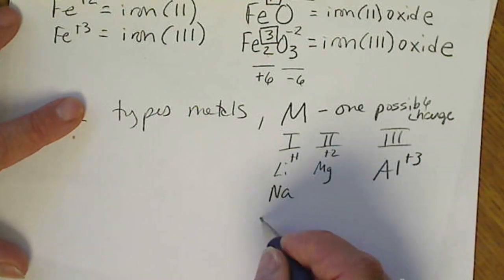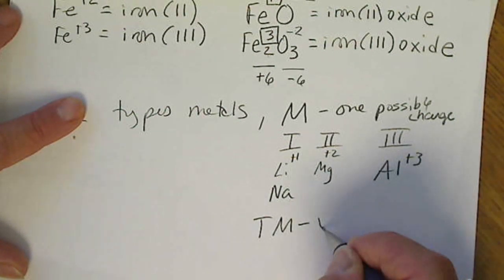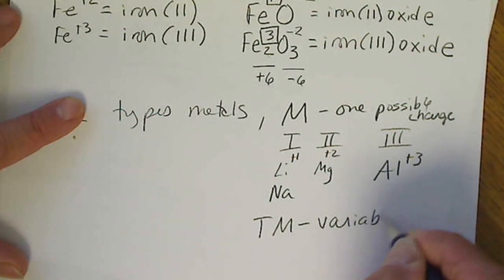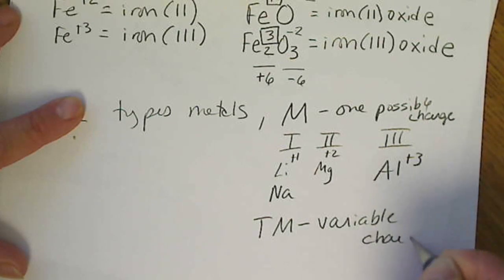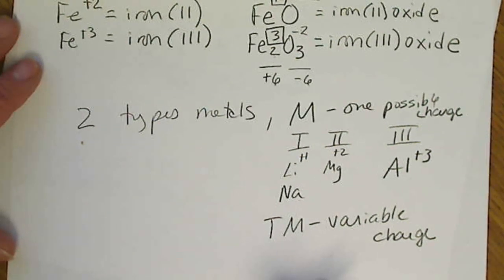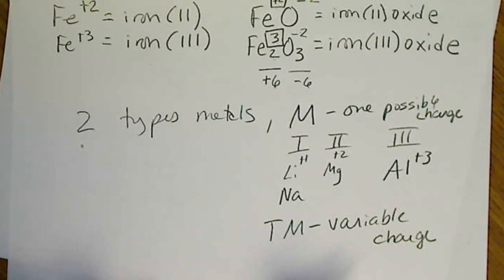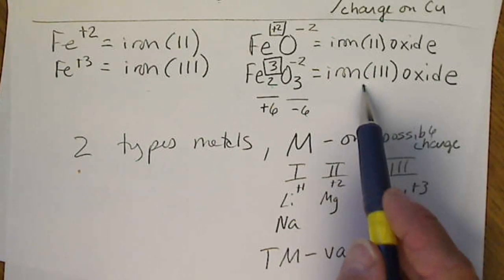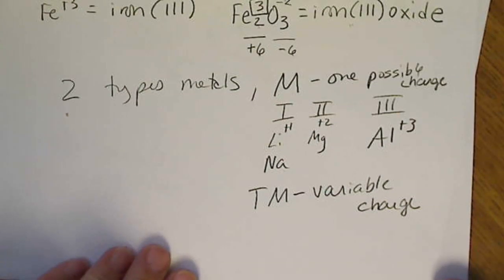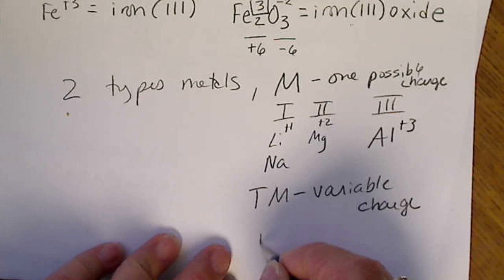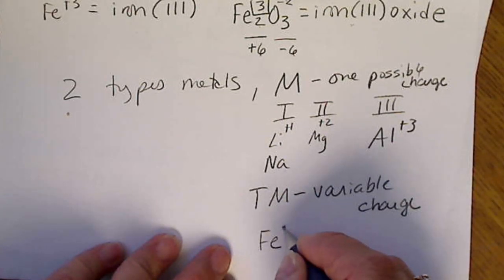We're also going to have a transition metal. So this is a variable charge. So the naming rules for metals, we name the metal and we name the non-metal, but the metal may need a Roman number. So the transition metal requires a Roman number.